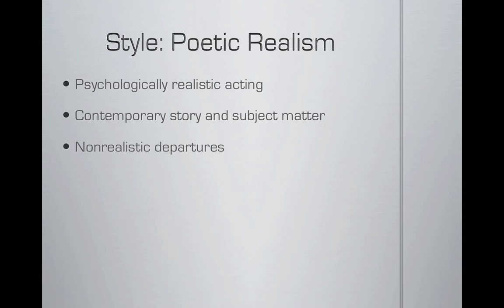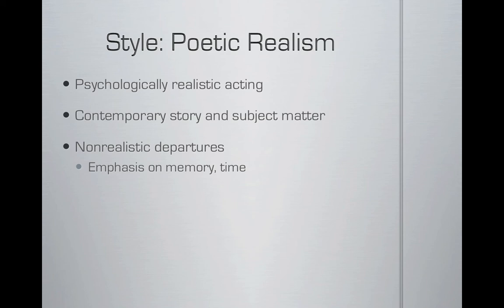However, in poetic realism there are a number of non-realistic departures. There is a consistent and recurring emphasis on memory and time. In Death of a Salesman, there are all kinds of places where the story jumps in and out of Willie's memory. His memory is fractured, and Arthur Miller is saying human memory is imperfect, so why should the way I tell this play be perfect in terms of its chronological explanation? We jump all over the place in time. Tennessee Williams' Glass Menagerie is another huge example — the whole thing is a framed memory play. So poetic realism places a big emphasis on how memory and time are complex, not realistic, and not reliable.